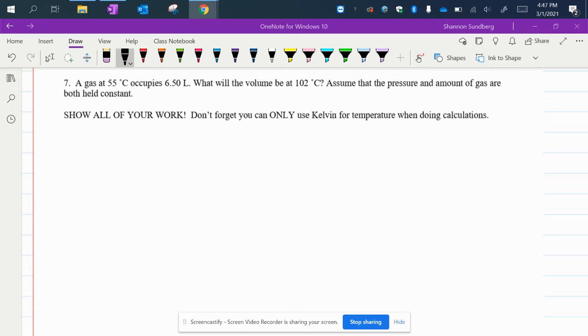Show all of your work. Don't forget, you can only use Kelvin for temperature when doing calculations. To change Celsius into Kelvin, you have to add 273. Kelvin equals degrees Celsius plus 273.